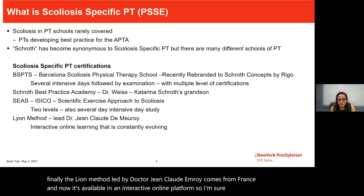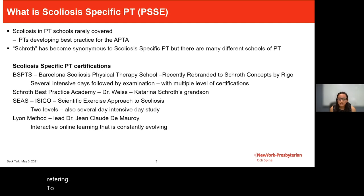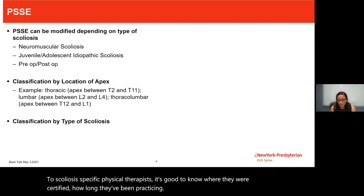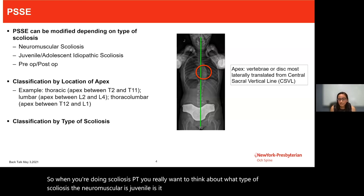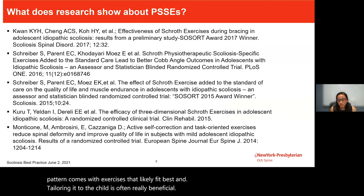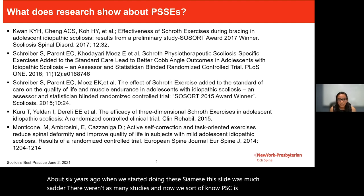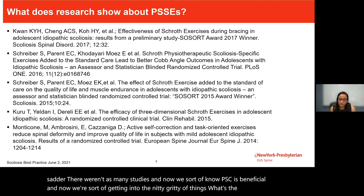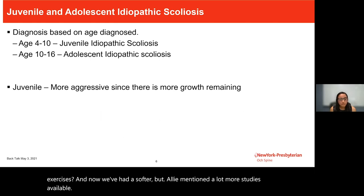When referring to a scoliosis-specific physical therapist, it's good to know where they were certified and how long they've been practicing. When doing scoliosis PT, you want to think about the type of scoliosis — neuromuscular, juvenile, adolescent — whether you're preparing for surgery or helping post-op. Essentially every curve pattern comes with exercises that likely fit best, and tailoring it to the child is beneficial. About six years ago this slide was much sparser; now we know PSSE is beneficial and are getting into the specifics of dosage, compliance, and best exercises.